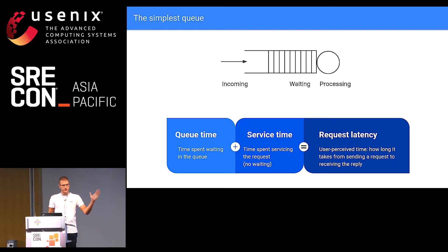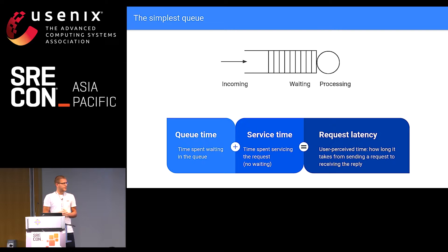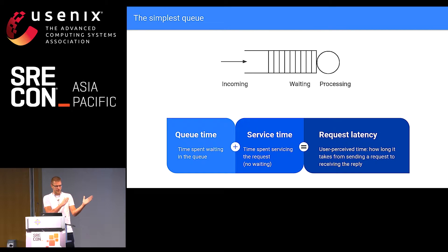Here's a schematic diagram of how a queue works. You have incoming requests waiting to be processed, and there is a processor — usually your CPU — handling these requests. There's a certain time requests need to wait in the queue: if the queue is empty, that time is zero, but if there are other requests already, they have to wait their turn. Then there's a service time, which is the time actually spent processing the request. You could call the queue time the unproductive time and the service time the productive time. Summing those two gives you the request latency — what an external user perceives.